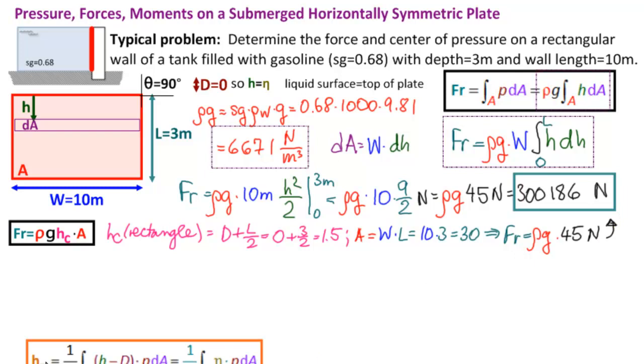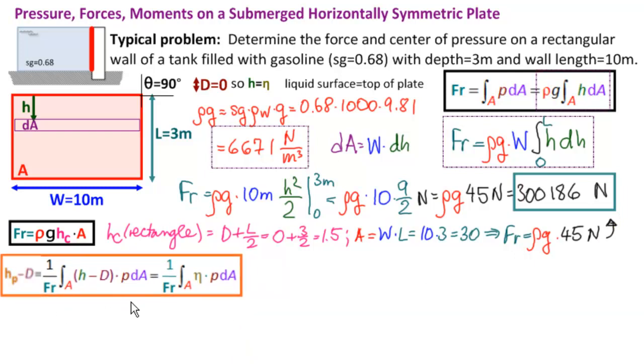Now we need to calculate our center of pressure. We're going to use the original formula here. So what do we have? We have substituting. We have 1 over FR. That's that part. The integral over A. H minus D is just H since D is 0. H times P times dA. As before, P is ρgH. ρg can come up front. So we have ρg over the resultant force. That's going to give us just 1 over 45 times our integral. What do we have? We have this H here and this H from P. So that's H squared and dA.